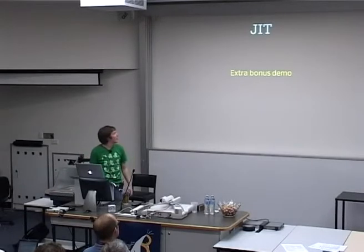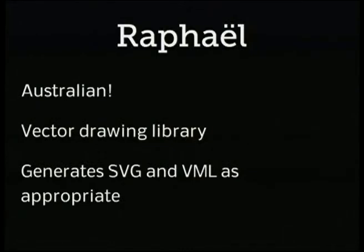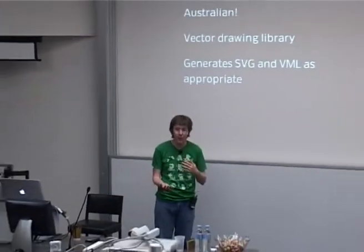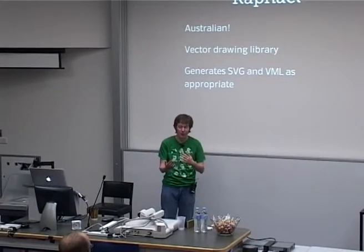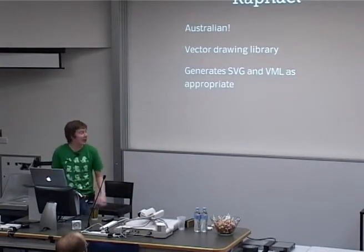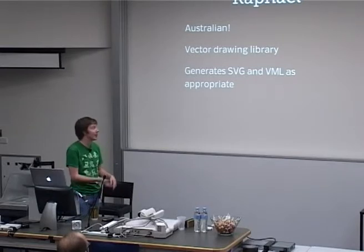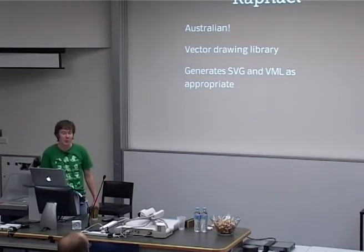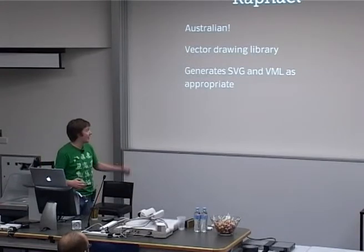That's the JavaScript InfoVis Toolkit. Now the other library I'm going to talk about is Raphael. Raphael is a vector drawing library, actually written by an Australian. The reason why it's cool is because you can use it like SVG — the interface is very similar to the concepts in SVG, and your drawing primitives are basically the same. But it will also generate VML as well, which is handy in Internet Explorer.